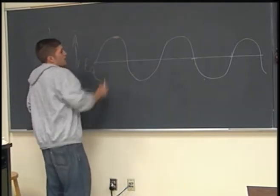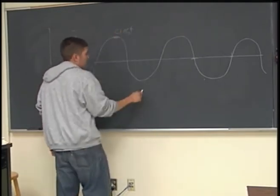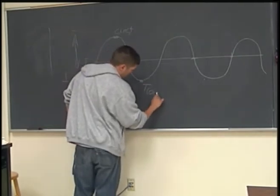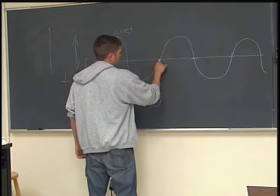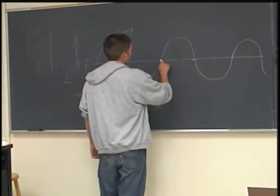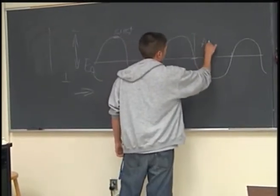The tops of the waves are called crests. The bottom of the wave, the lowest point, is called a trough. And the distance from equilibrium, either to the trough or from equilibrium to the crest, is called amplitude.